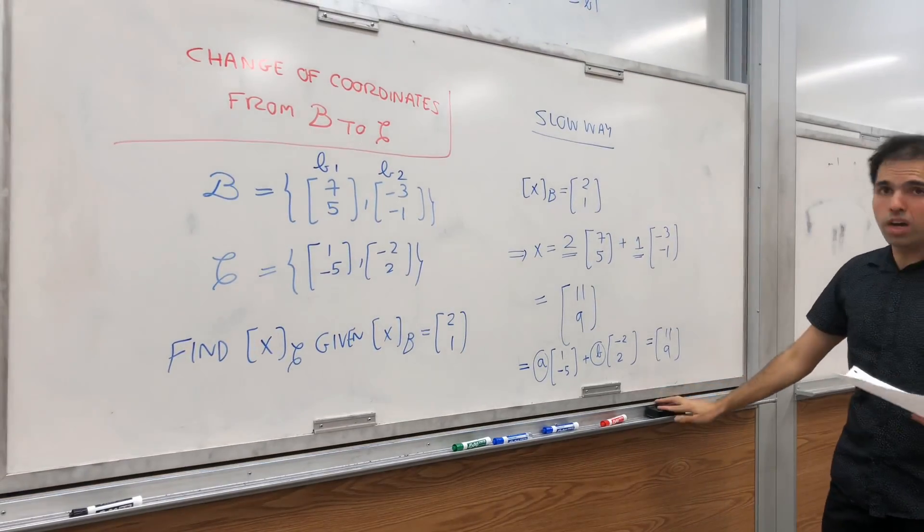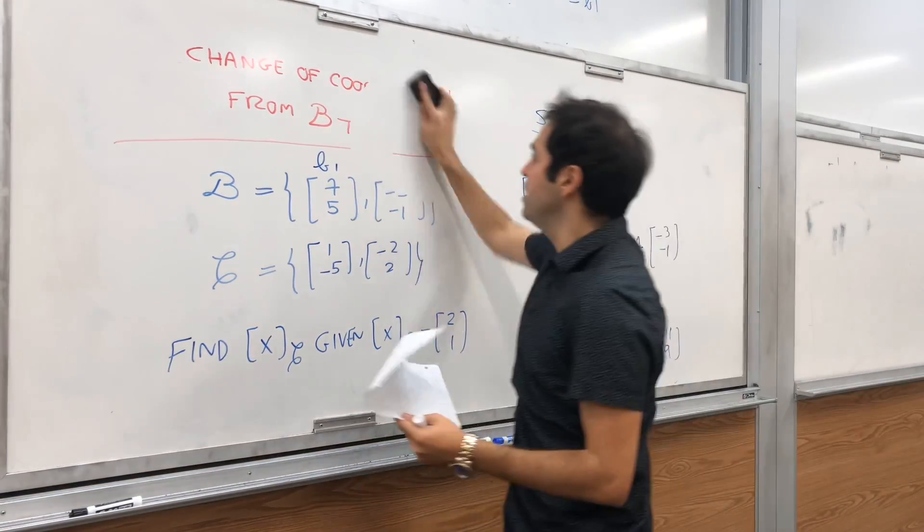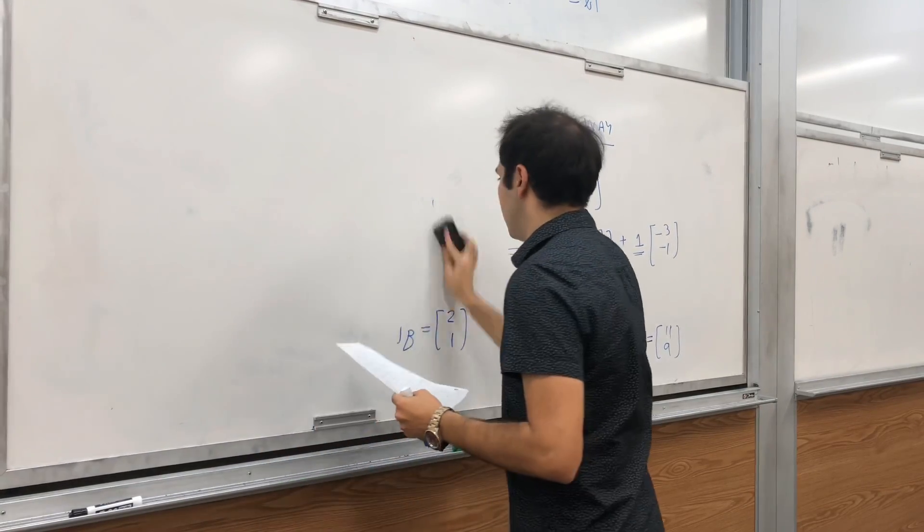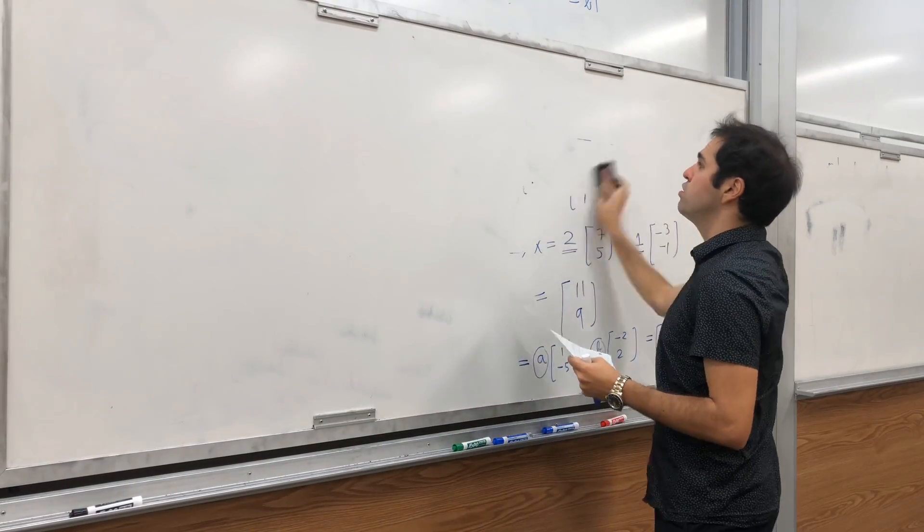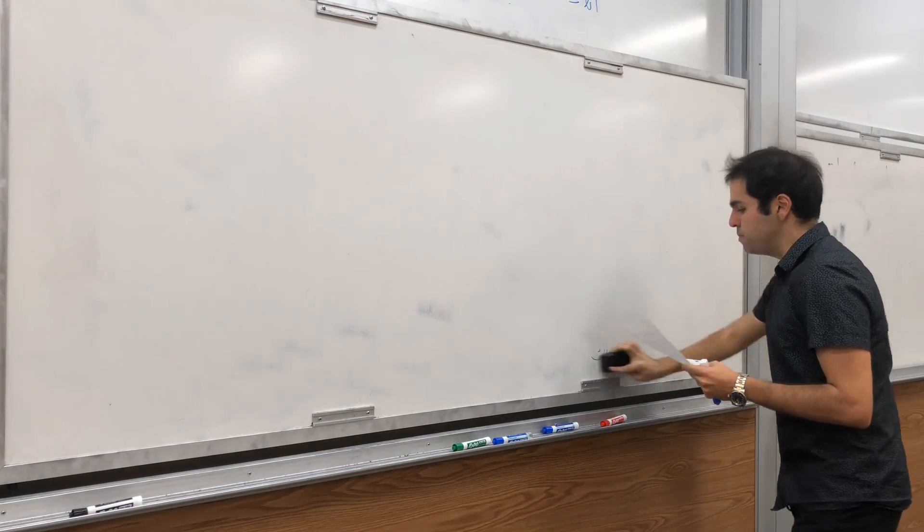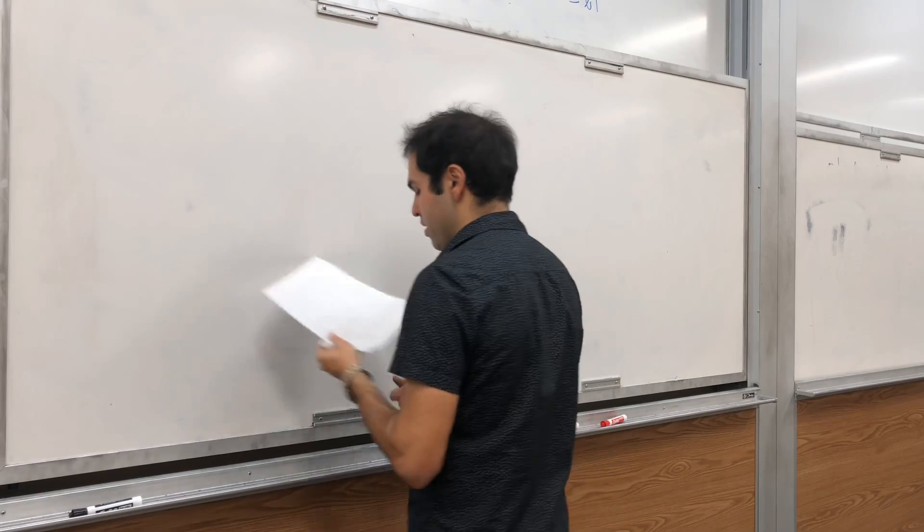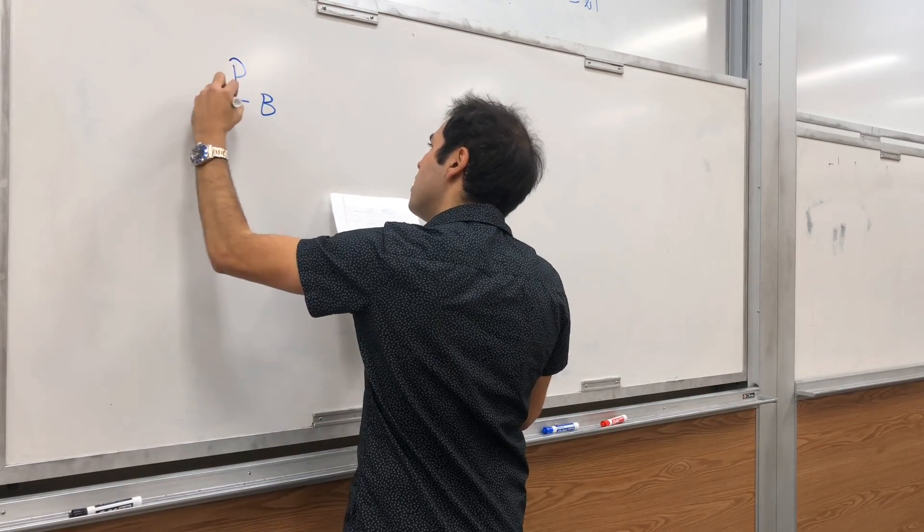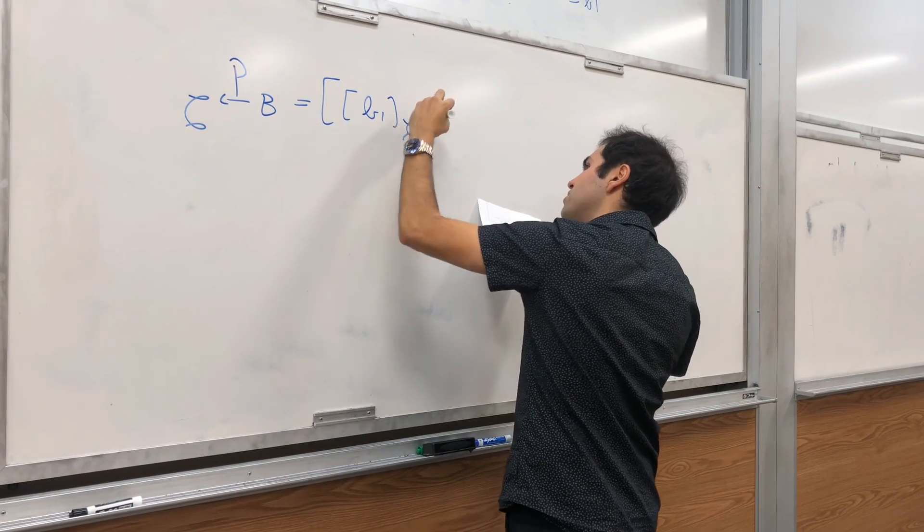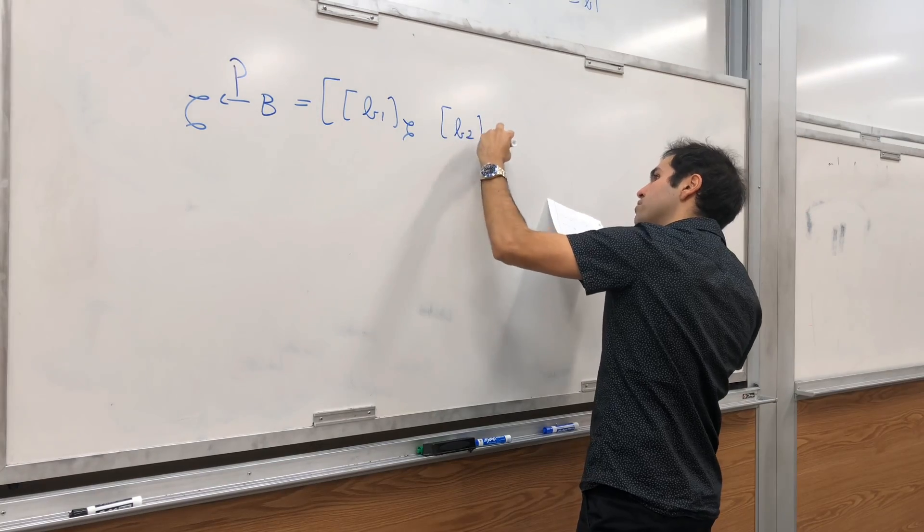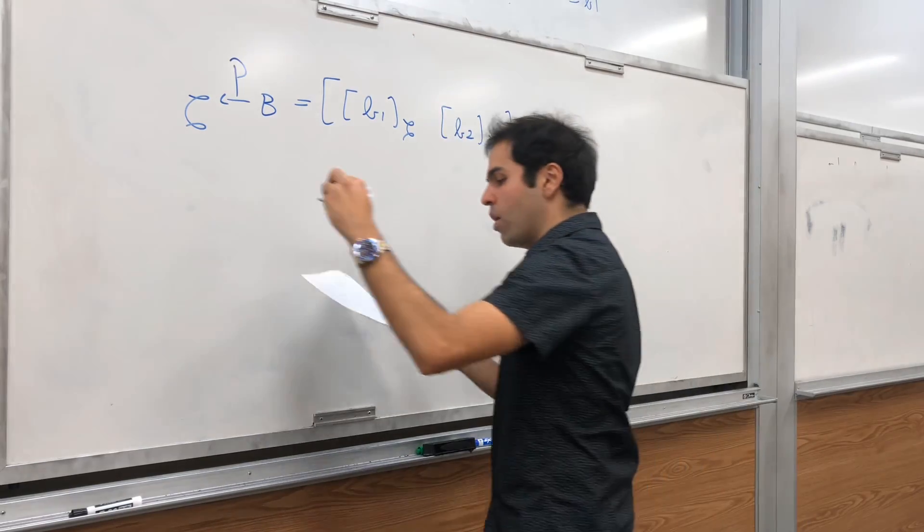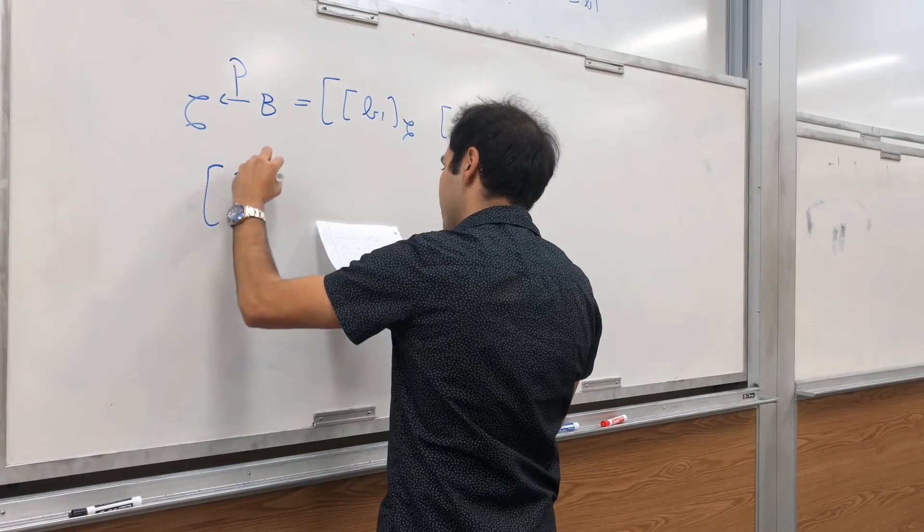And so, to construct this matrix P, B, C, you just need to do the following thing. You basically just need to figure out the coordinates of B1 with respect to C, and the coordinates of B2 with respect to C. So, again, P, B, C. That's the coordinates of B1 with respect to C, and B2 with respect to C. So, technically, what you have to do, you have to take the vectors B1 and B2, which are 7, 5, and minus 3, minus 1.